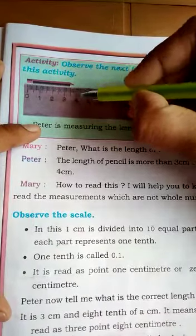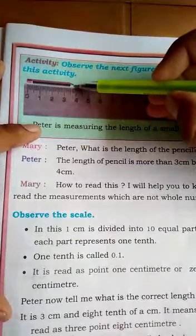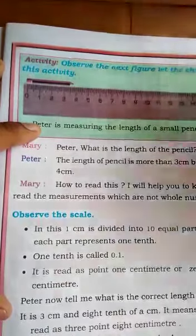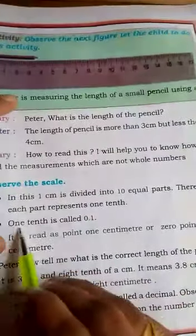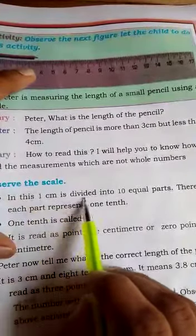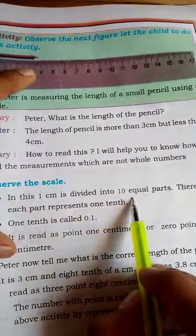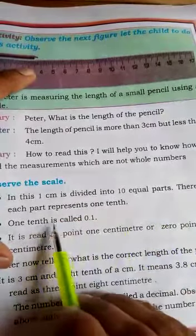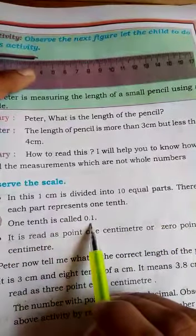5, 6, 7, 8 divisions. Exactly it coincides after 8 divisions. In this case, 1 centimeter is divided into 10 equal parts. Therefore, each part represents 1 tenth. 1 tenth is called 0.1.